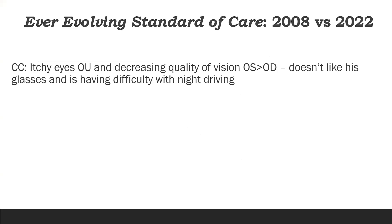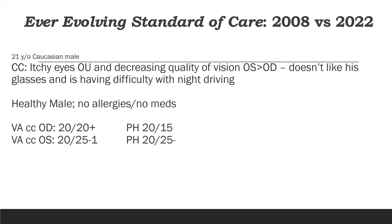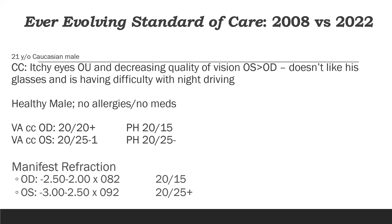Let's look at a case from 2008 versus how we would handle it today. We have a young patient coming in — 21 years old, Caucasian male — with itchy eyes, decreased quality of vision starting in the left eye, dissatisfaction with his glasses, and difficulty with night driving. He's healthy with no allergies or medications. Vision in the right eye is 20/20 to 20/15, while the left eye is 20/25 minus with pinhole not helping much.